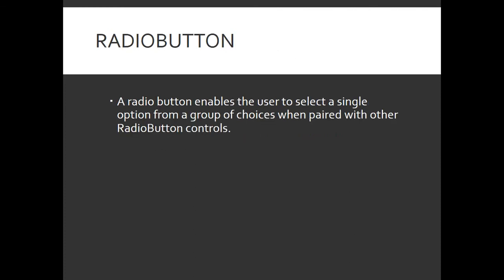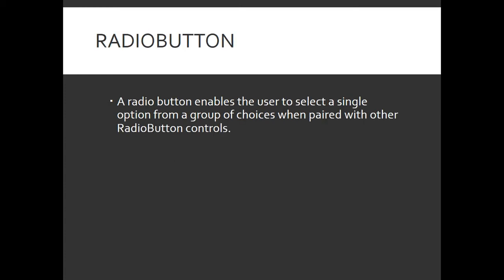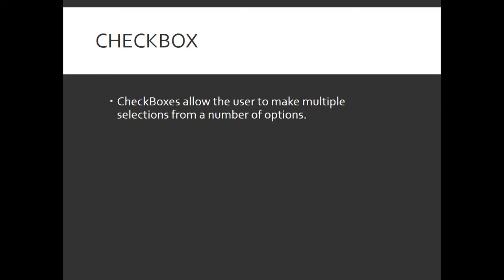The next basic control is RadioButton. A RadioButton enables the user to select a single option from a group of choices of similar controls. The next control is CheckBox, which is used to take multiple inputs from the user. So the RadioButton is used to take single input, whereas the CheckBox is used to take multiple inputs from the user.